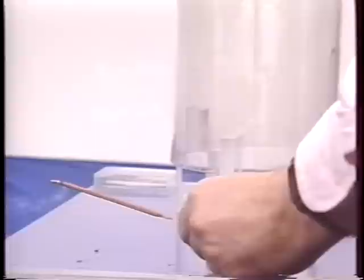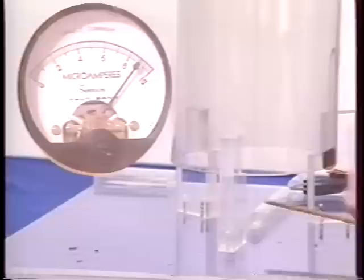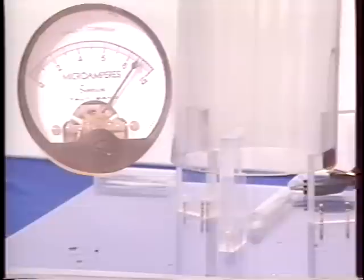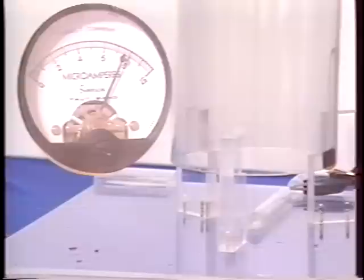Common smoke alarms depend on the tendency of fine particles to collect these ions. Here we have a source of smoke. Watch what happens to the current as the smoke is introduced. As the smoke enters the region of ionic conduction, the current is reduced.